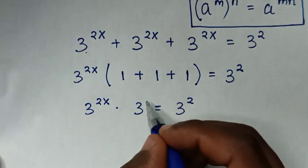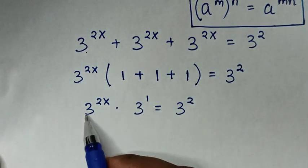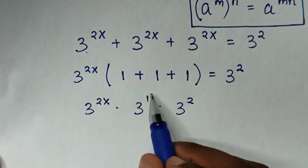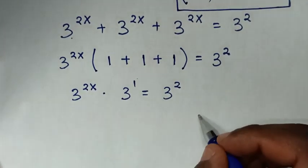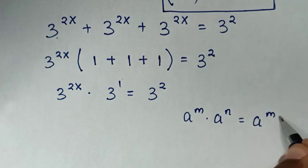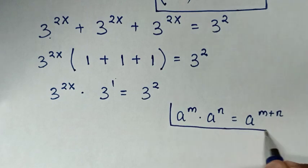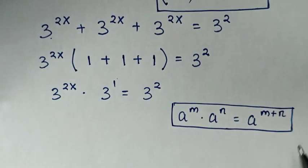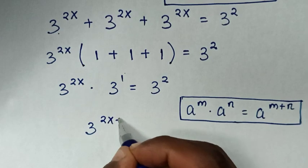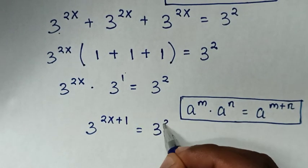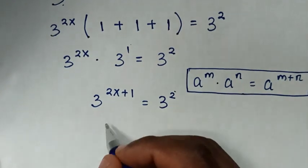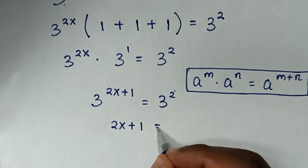Here, 3 is the same as 3 power 1. So we have a multiplication of exponents with the same base of 3 but different powers. We apply the exponential rule that a power m times a power n equals a power of m plus n. So it will be 3 power (2x plus 1) is equal to 3 power 2.